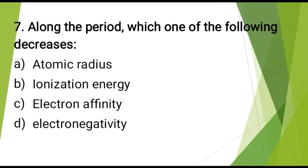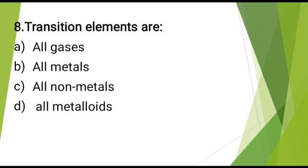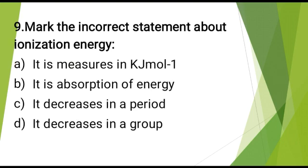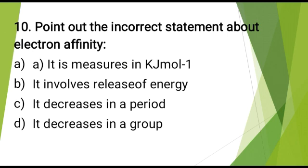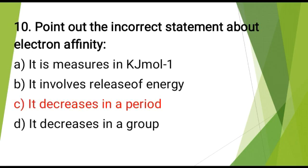Along the period, which one of the following decreases? The correct answer is: atomic radius. Transition elements are? The correct answer is: all metals. Mark the incorrect statement about ionization energy. The correct answer is: it decreases in a period. Point out the incorrect statement about electron affinity. The correct answer is: it decreases in a period.